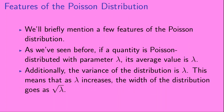Let's briefly mention a few features of the Poisson distribution. As we've seen, if a quantity is Poisson distributed with parameter λ, its average value is λ. Additionally, the variance of the distribution is λ, which means that as λ increases, the width of the distribution grows as the square root of λ.